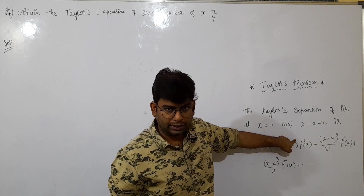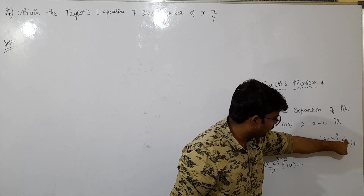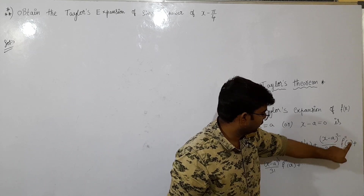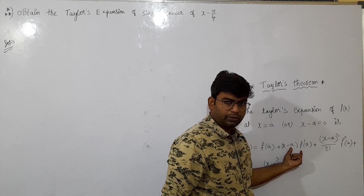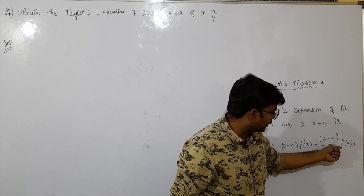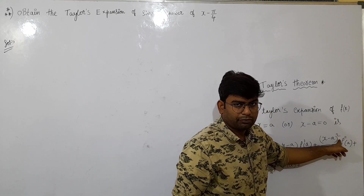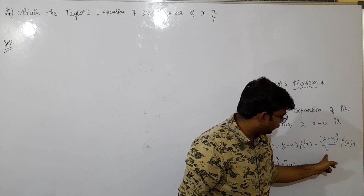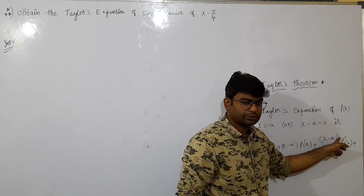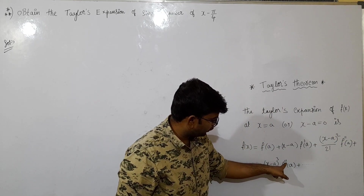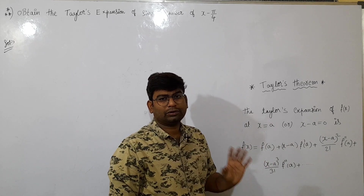Second derivation is equal to A. Third derivation — here is 3. Fourth derivation is equal to A — here is 4. Fifth derivation is equal to A — here is 5. The third derivation is equal to A — that's the formula.